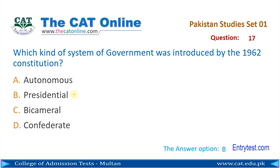Question number 17: Which kind of system of government was introduced by the 1962 constitution? 1962 کے آئین کے ذریعے کس طرح کا نظام حکومت متعارف کرایا گیا تھا? The correct answer is B — Presidential.